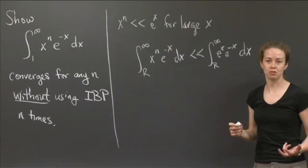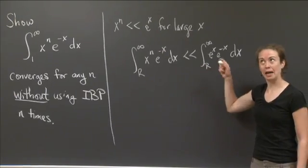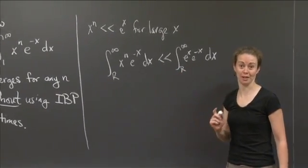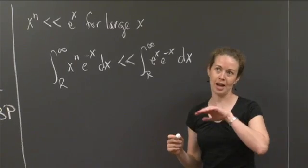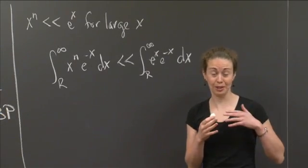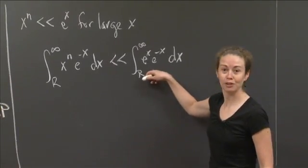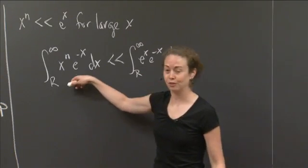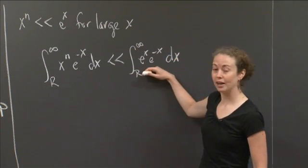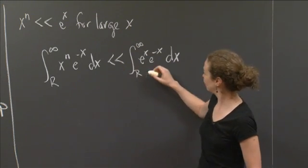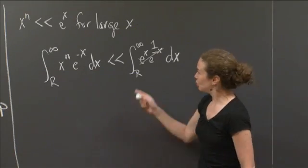But what happens there? e to the x times e to the minus x is e to the x plus negative x, which is e to the 0, so it's 1. So this is integrating the constant 1. The constant 1 from R to infinity — that's the line y equals 1 from R to infinity, an arbitrarily long rectangle with infinite area. So this integral diverges. That doesn't mean the original one diverges, because this one is smaller than that one. So the original integral could still converge even though this comparison integral diverged.